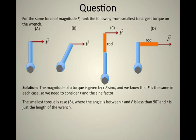The smallest torque in any of these cases will be B, because it's happening at a distance R, the length of the wrench, and the angle between R and F is less than 90 degrees, so the sine of that angle will be less than 1. So that's going to be the smallest torque.